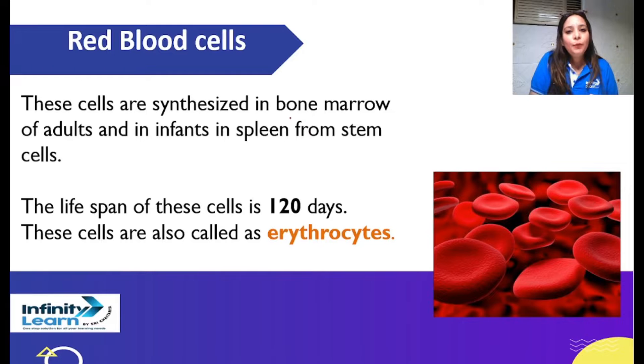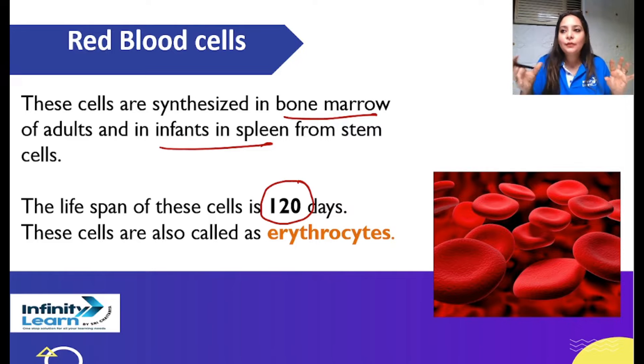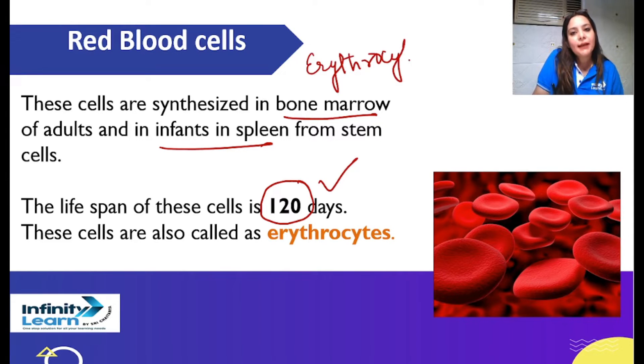So here when stem cells are formed, then from stem cells your RBC, WBC, and platelets are being formed depending upon what work they have to do. According to that, characteristics are being developed in them. So RBC, WBC, and platelets, they are formed from common stem cells. So RBCs are formed in bone marrow in adults, in spleen in infants. And how many days can they live? Like our life span is not fixed, but cells' life span is known and is approximately fixed. So RBC's life span is 120 days. And RBC can be called by another name, they can be called as erythrocytes.